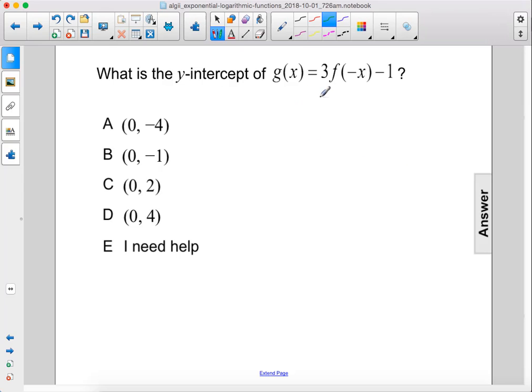What is the y-intercept of g(x) = 3f(-x) - 1? In previous problems, we were given that f(x) = 3^x.